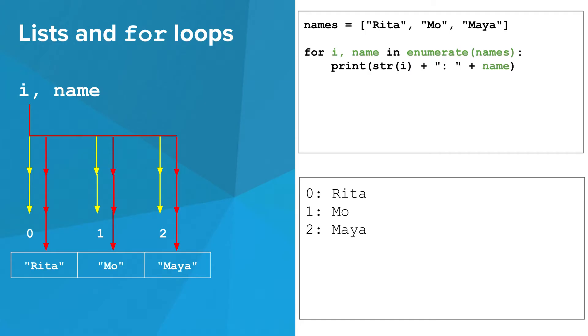Take a look at the for loop in the upper right and notice a couple things. First, the list names is now put in a call to this new function called enumerate. Second, there are now two variables, i and name, separated by a comma after the word for.